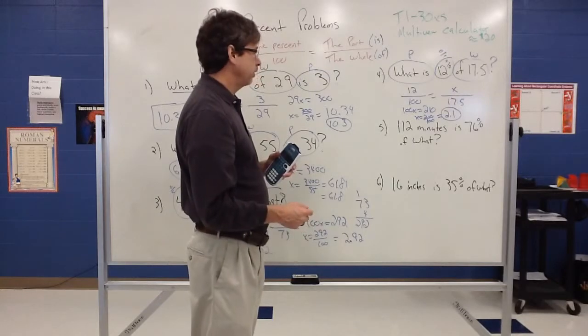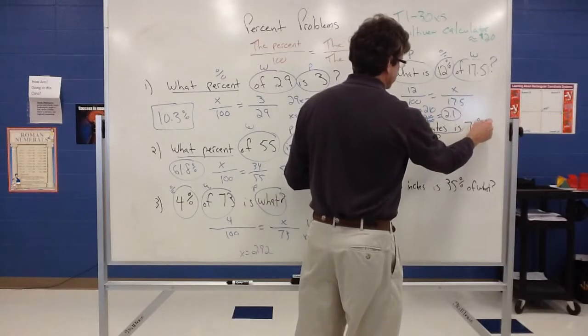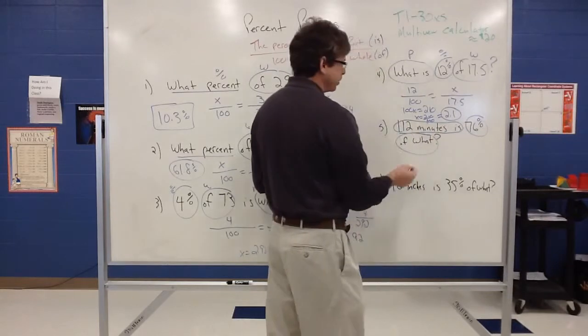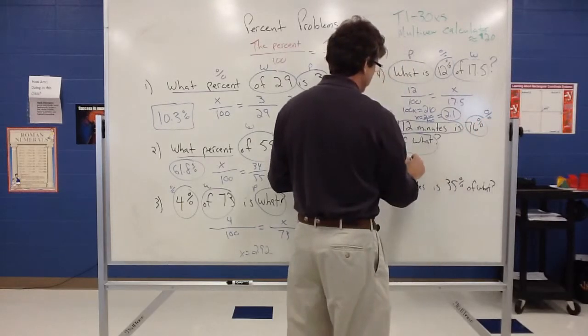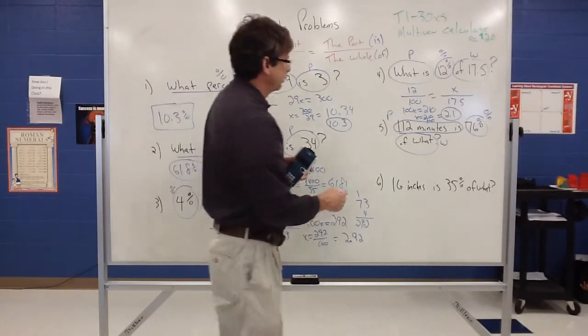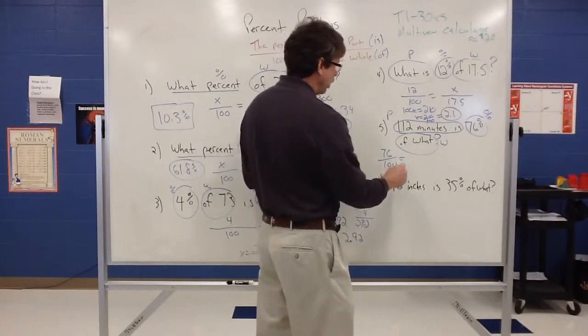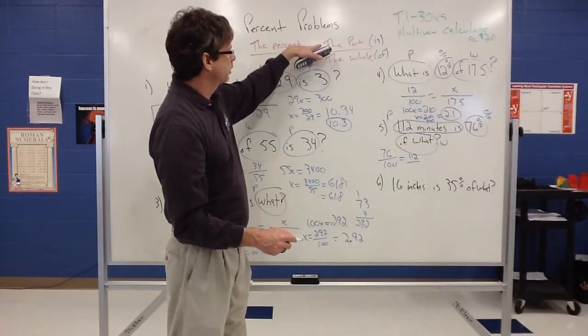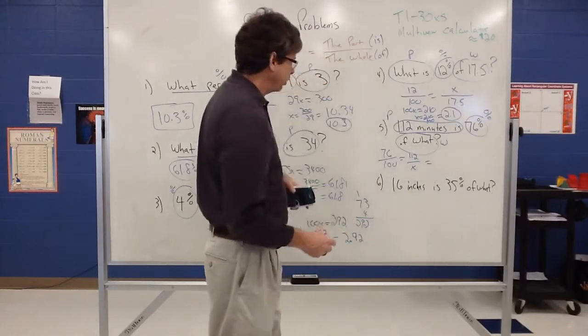So let's look at example five here. 112 minutes is 76% of what? So we have 112 minutes is 76% of what? So it looks like I have those three pieces again: the part, there's my percent, and there's my whole. So again, I can use my proportion and substitute in. 76% is going to be 76 out of 100. We know the part this time, that's 112. Remember, the part's in the top of the proportion, top of the fraction, the part is up there. The whole this time is what we don't know.